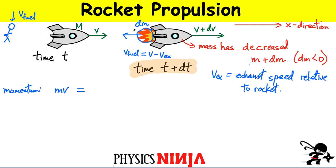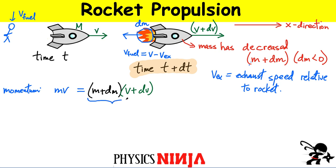Regardless, let's write down the total momentum of this system after. Since there's no external force, that momentum has to be conserved. If we first look at the momentum of the rocket, the mass of the rocket is no longer m — it's going to be m plus delta m, and that has to be multiplied by the velocity v plus dv. This first term is only for the rocket. We also need to account for the momentum of the ejected mass, which is moving in the opposite direction. So I write that as minus v_fuel multiplied by the mass element dm.